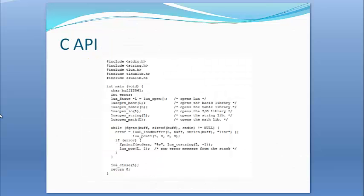On this screen we have an example of the C API integration. This is a very simple C program using the Lua libraries and calling some Lua commands to create a table and do some basic string manipulation. As you can see, it's very simple and straightforward to integrate Lua into a C program.